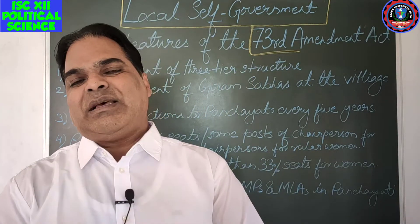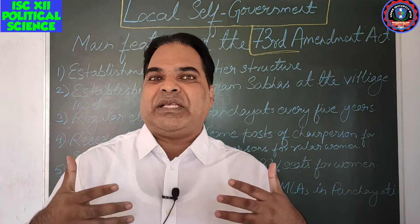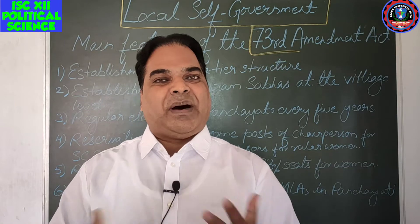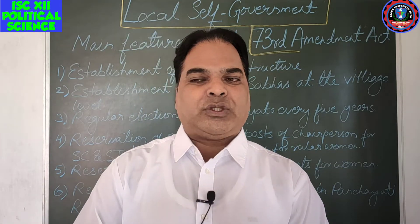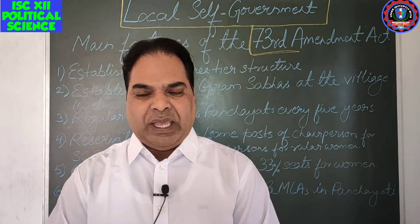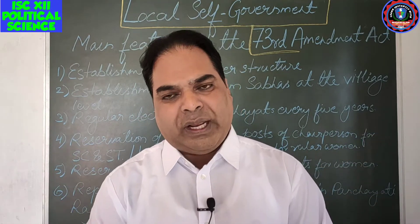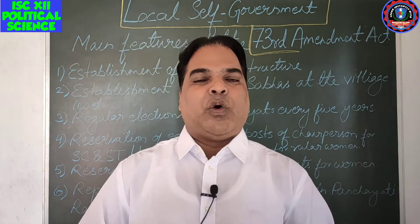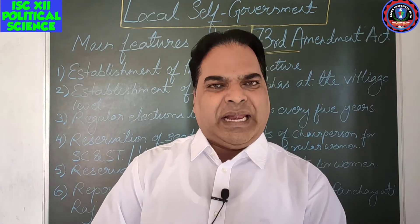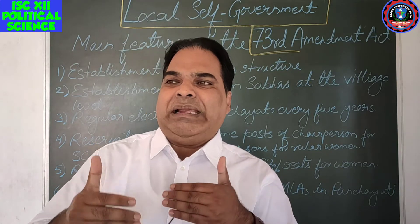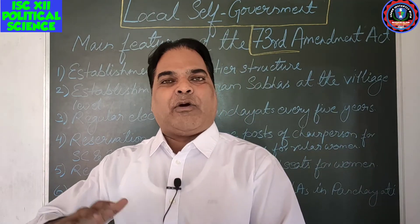So in local self-government we'll discuss the 73rd Amendment Act. Why was this 73rd Amendment Act passed? For removing the defects of Panchayati Raj as well as for strengthening its institutions, the Union Parliament passed the 73rd Amendment Act in the year 1992. Its main purpose was to remove defects and strengthen Panchayati Raj in India. On April 23rd, 1994, all the states of India completed the process of enacting fresh laws for strengthening their respective Panchayati Raj institutions.